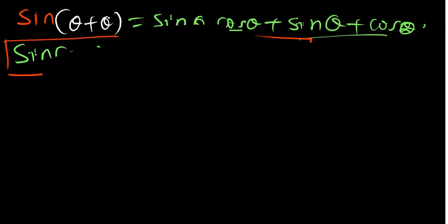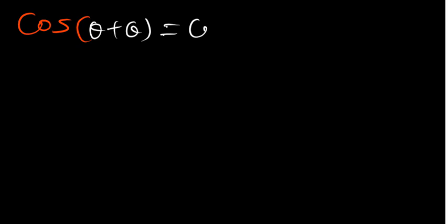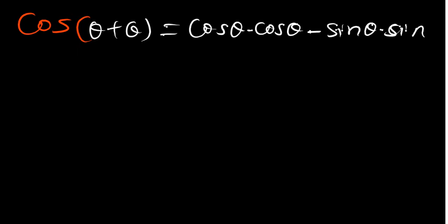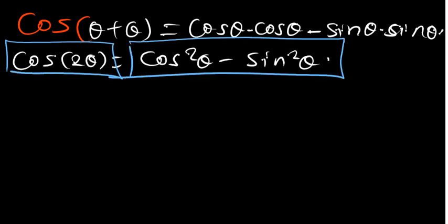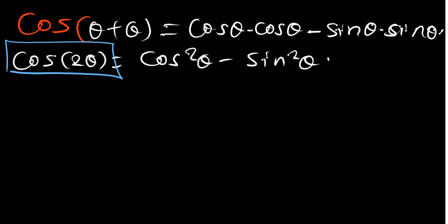Another identity you have to know is for cosine. If I have cos of theta plus theta, that is cos theta times cos theta. Since there is plus here, this is going to be minus — giving cos squared theta minus sin squared theta. So wherever you see cos 2 theta, you can replace it with cos squared theta minus sin squared theta. From this identity, we can derive two more identities.